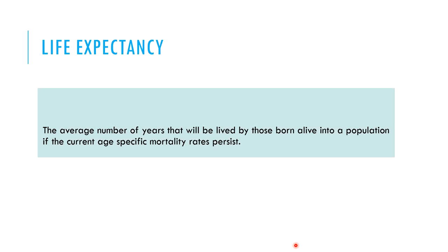The next indicator is life expectancy — the average number of years that will be lived by those born alive in a population, if they pass through the current age-specific mortality rates. For example, in Japan the life expectancy is more than 83 years, meaning a newborn is expected to reach age 83 if passing through all age-specific mortality rates. In contrast, the life expectancy for a Pakistani male is only 65 years.